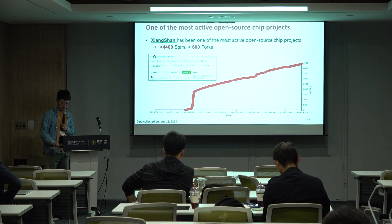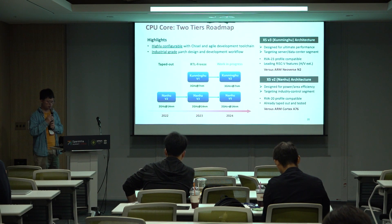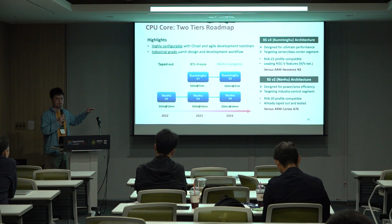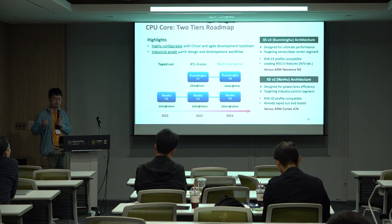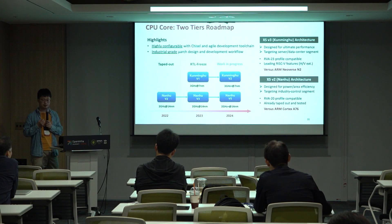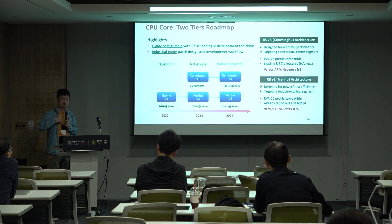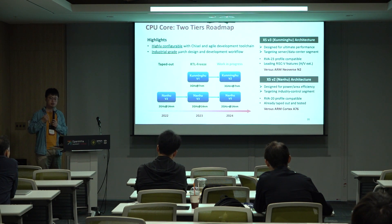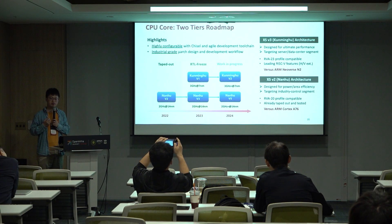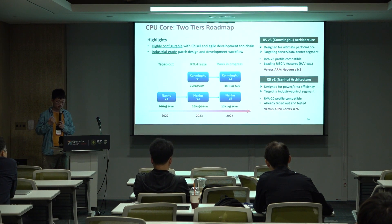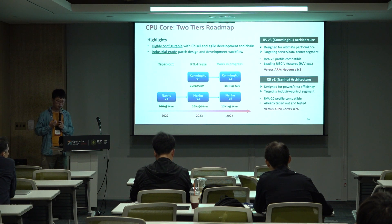The roadmap of our CPU core includes two tiers: version 2, mostly targeting ARM Cortex-A76, and version 3, mostly targeting ARM Neoverse N2. A key highlight compared against ARM is that we provide a highly configurable CPU core. Because we are open sourcing everything at the IP source code level, you can configure the pipeline width, queue buffer sizes, cache sizes, cache ways, cache sets, and prefetchers — everything is configurable.